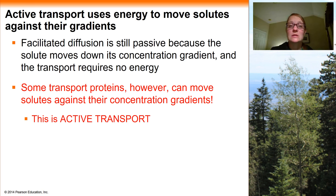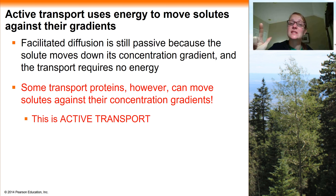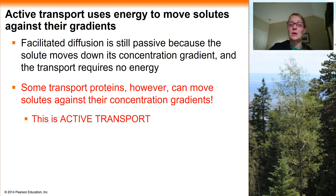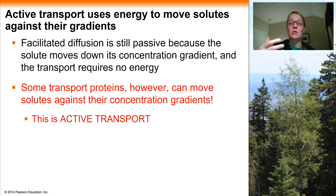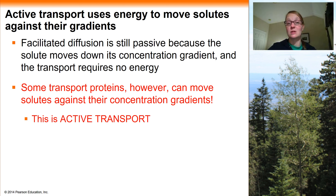So far what we've discussed when talking about solutes moving across a selectively permeable membrane have involved either simple diffusion or facilitated diffusion. Simple diffusion is just allowing materials to move down their concentration gradient across this membrane. Sometimes those solutes can't move by themselves across the membrane, either because they're polar or charged. In that case we use facilitated diffusion in conjunction with transport proteins to help give those solutes a safe passageway to move down their concentration gradient across that plasma membrane.